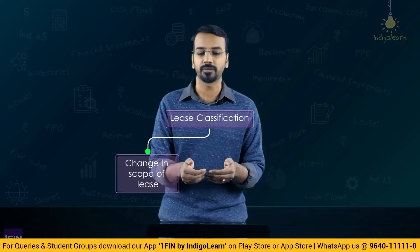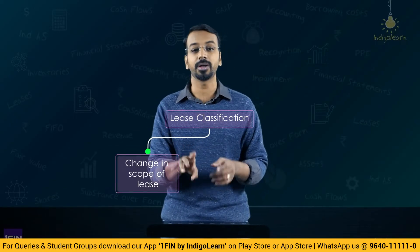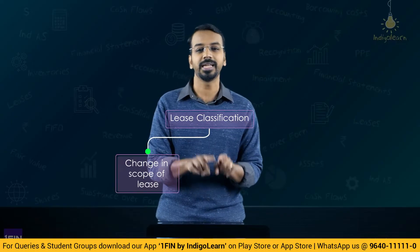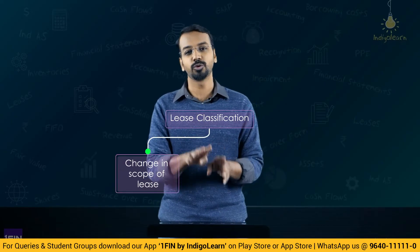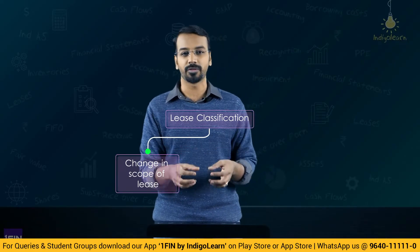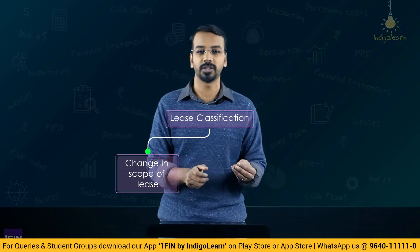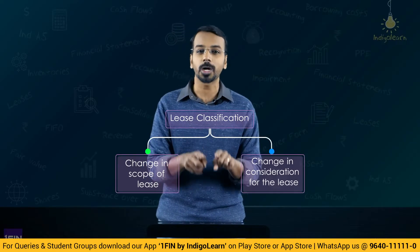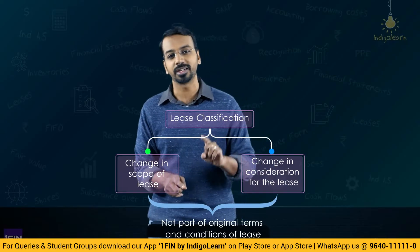Then we spoke about lease modification. Whenever there is a lease modification, we reassess the classification. Classification of operating lease and finance lease is done at the inception, and after that you do not reassess the classification unless there is a lease modification. A lease modification involves an increase in scope, a reduction in scope, or a change in consideration which were not part of the original terms and conditions.